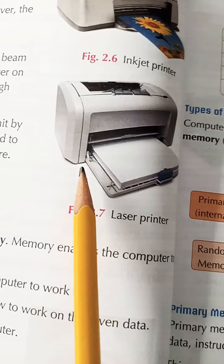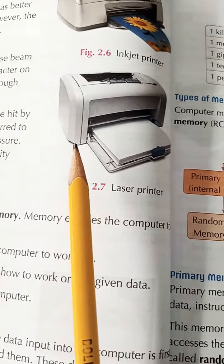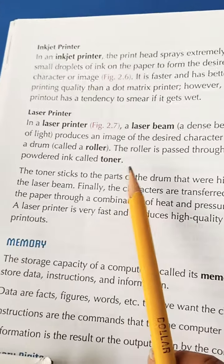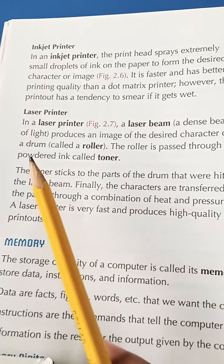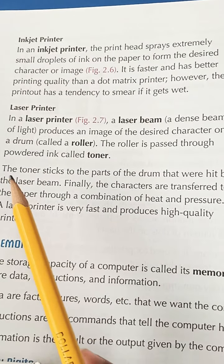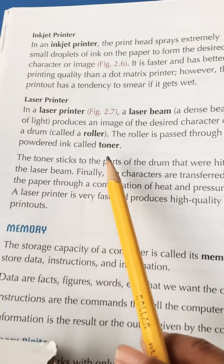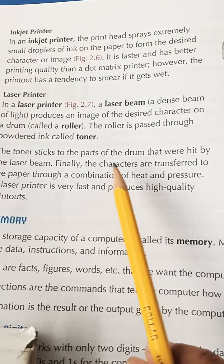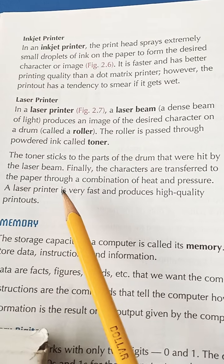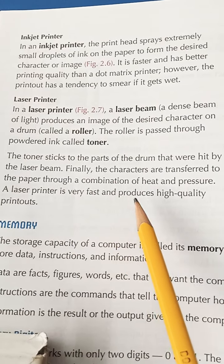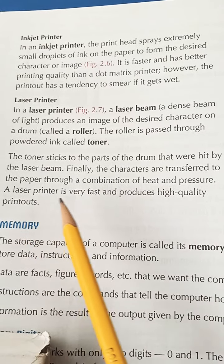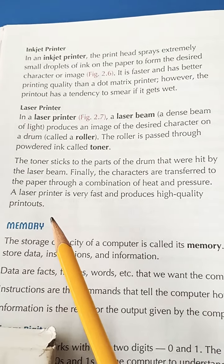Next is the laser printer. Laser printer is also used in our schools. We use this in our school. In this type of printer, the laser beam is produced. The paper is called roller and the roller has powder ink which is called toner. The toner is on the drum. The paper is transferred to paper with combination of heat and pressure. A laser printer is very fast and produces high quality print out.